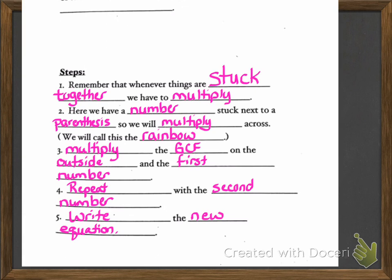Step 3, we're going to multiply the GCF, which is the outside number, and the first number, and then of course we write it down. Then we're going to repeat with the second number. So that means we're going to take the GCF and multiply by the second number on the inside of the parentheses. In step 5, we write the new equation.